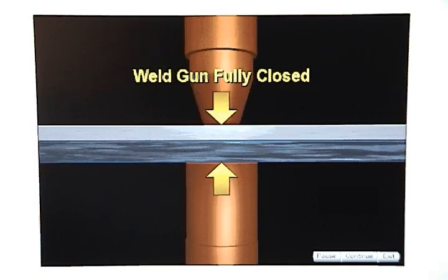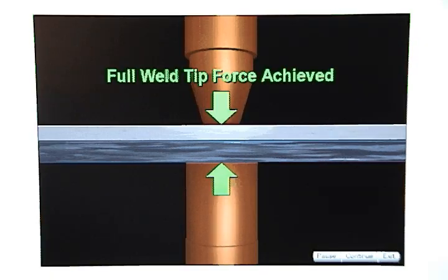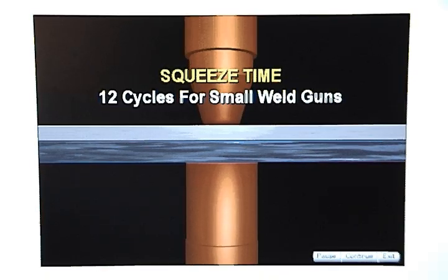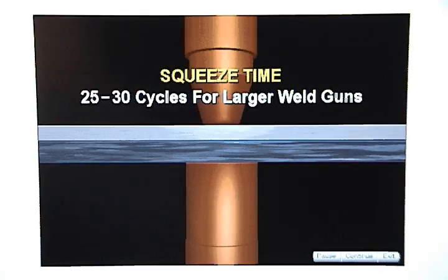The metal is squeezed for a short time to make sure that the weld gun is fully closed and that the full weld tip force is achieved. This is referred to as squeeze time. A squeeze time of about 12 cycles is used for small weld guns and 25 to 30 cycles are used for larger weld guns.